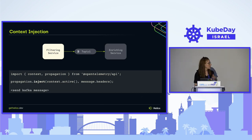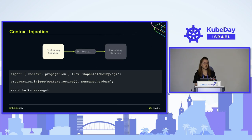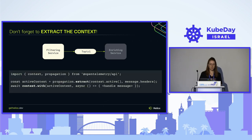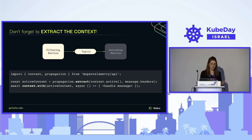Here you can see an example — specifically in Node — showing how easy and straightforward this is. You inject the active context into the message headers and then send the message. On the receiving end, we also need to extract it and apply it to the rest of the code — which is also very easy with the API: simply extract the context from the headers and run the rest of the code with that context.